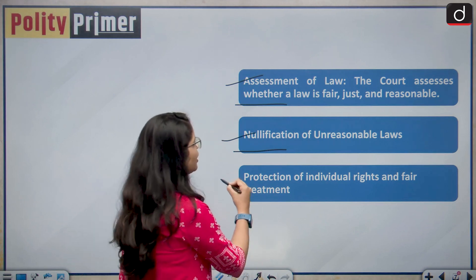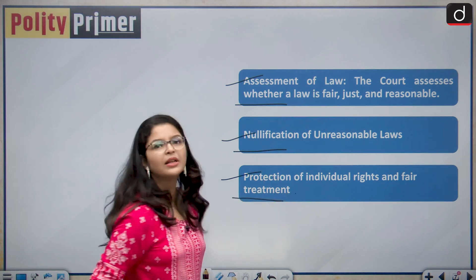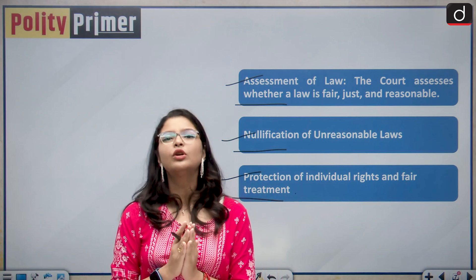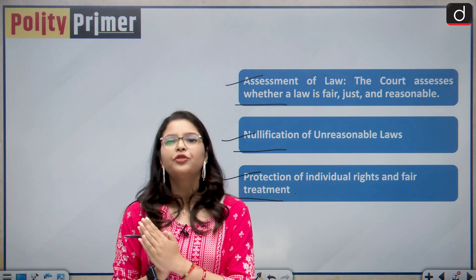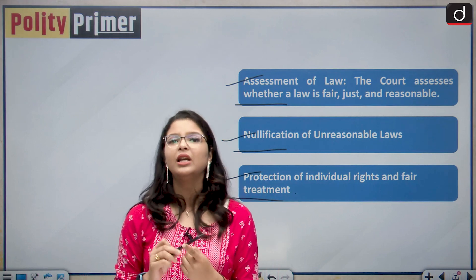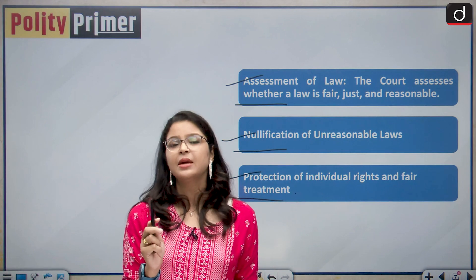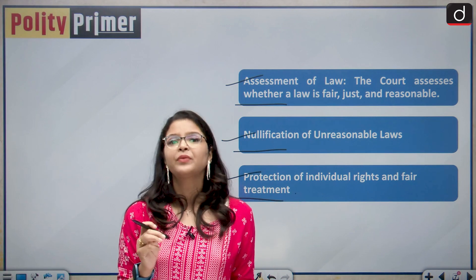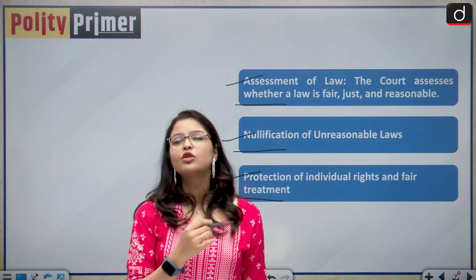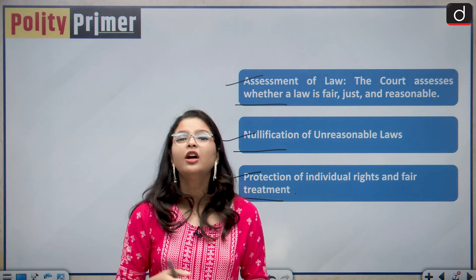Third, there is protection of individual rights and fair treatment. The court ensures that individual rights and freedoms are protected, and any procedure that violates them should not be arbitrary. This was all about the doctrine of due process of law.